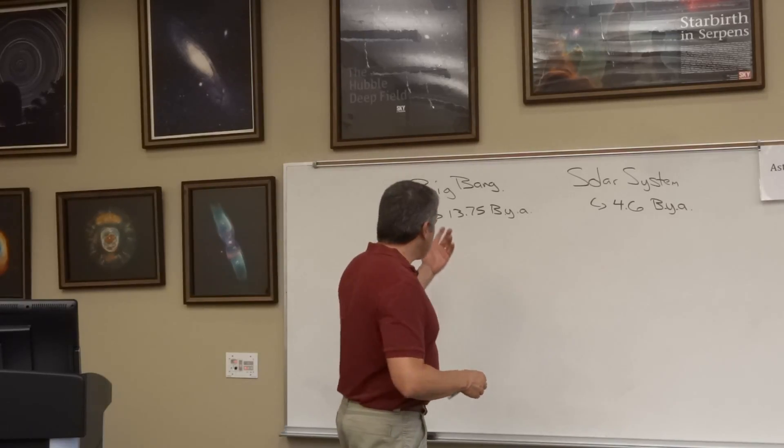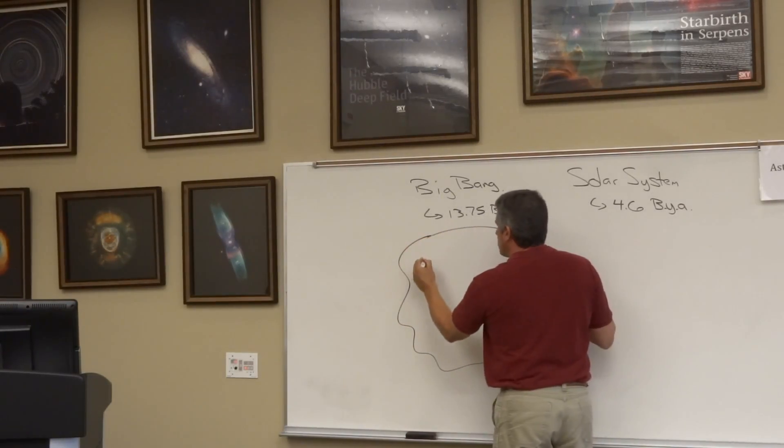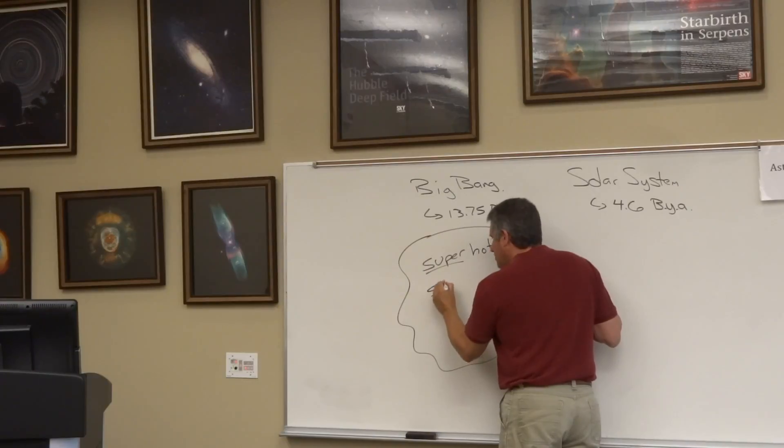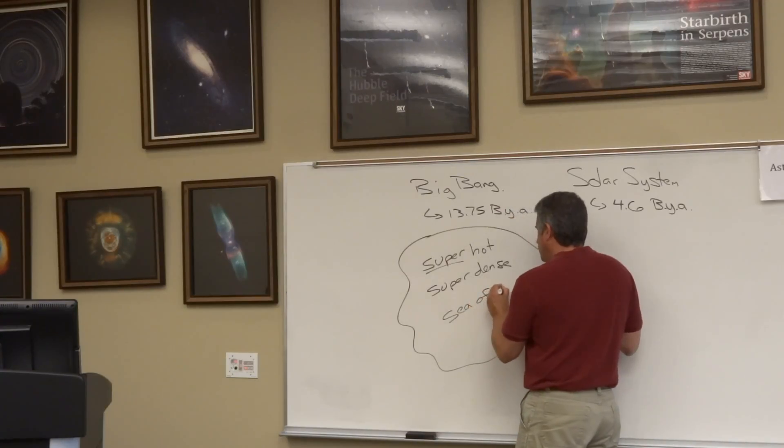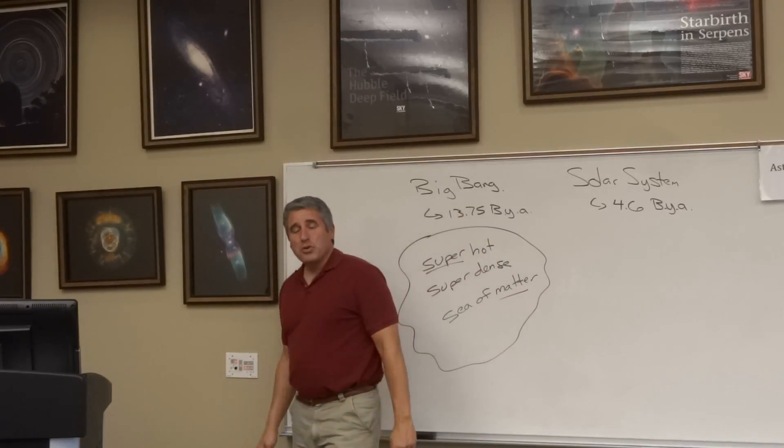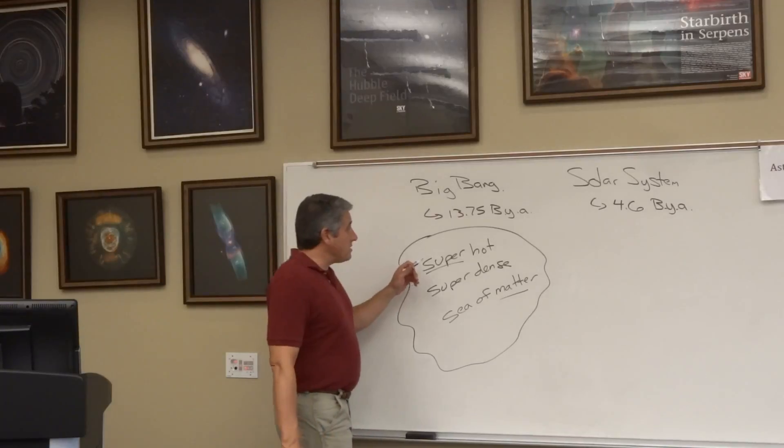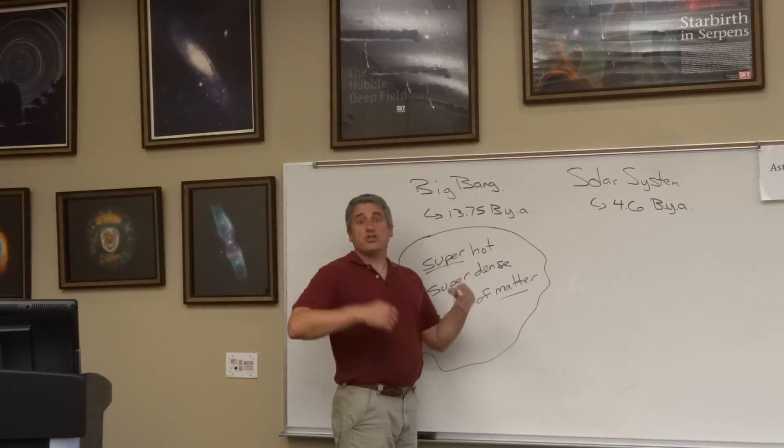The universe begins 13.75 billion years ago as some sort of hot - how hot? Superhot. A superhot, superdense sea of matter. I don't mean to be glib when I talk about how hot it is calling it superhot, but we don't know. We're probably talking about trillions of Kelvin. The universe begins as extremely hot, extremely dense, and it's disorganized matter.